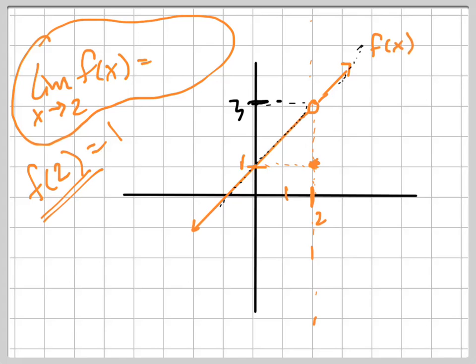How about from the right? As I get closer and closer to 2 from the right, the x value gets closer and closer to 2, right? Getting closer and closer, what would I expect the function value to be? 3.